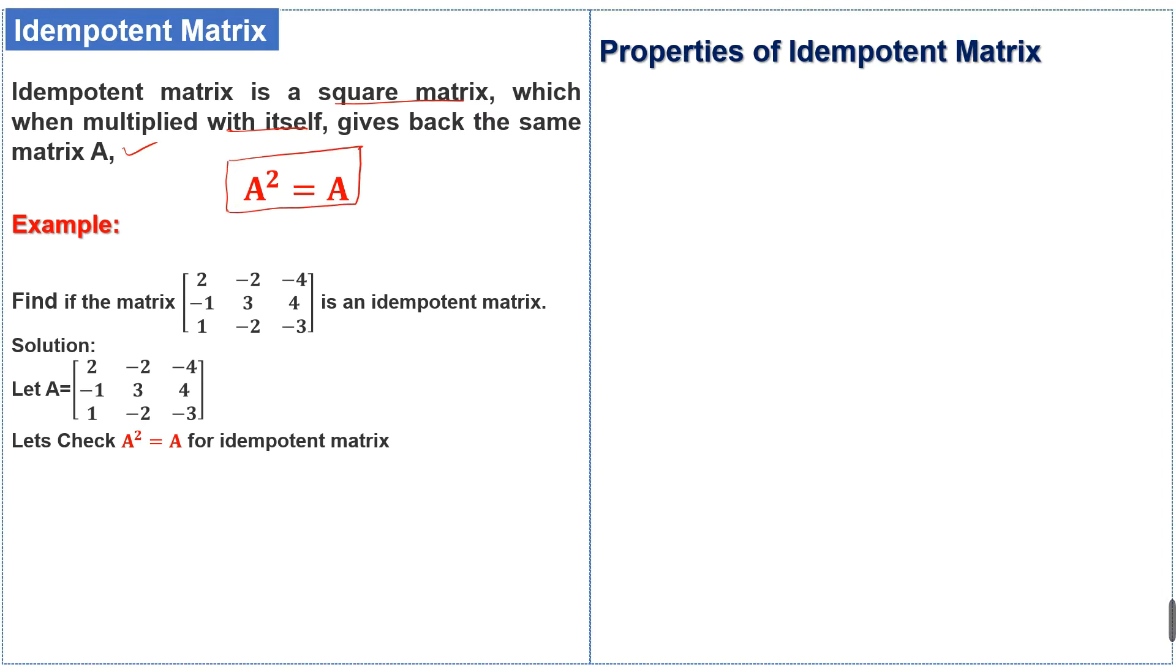We have an example: find if the matrix is an idempotent matrix. Solution: we have the matrix A, and to check the idempotent matrix we take the square of this matrix.